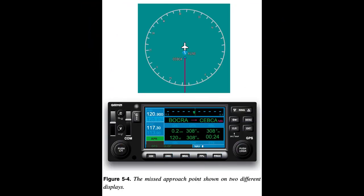Identifying the Missed Approach Point. The Moving Map display is an especially useful aid for recognizing arrival at various points, including the missed approach point during an instrument approach. The Moving Map display complements the distance readout on the PFD/MFD/FMS. Figure 5-4 shows two indications of an aircraft arriving at a missed approach point. The position of the aircraft on the Moving Map is very clear, and the range setting has been used to provide a more detailed view of the missed approach waypoint.